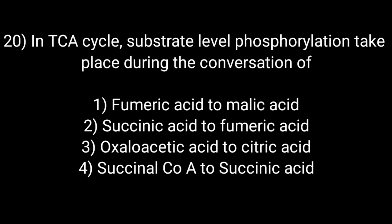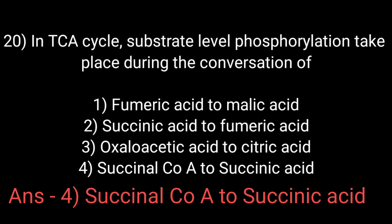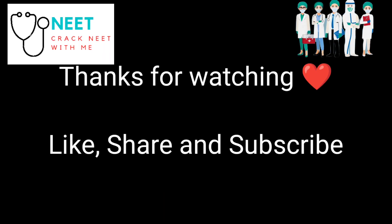In the TCA cycle, substrate-level phosphorylation takes place during the conversion of: Option number first: fumaric acid to malic acid. Option number second: succinic acid to fumaric acid. Option number third: oxaloacetic acid to citric acid. And option number fourth: succinyl coenzyme A to succinic acid. The correct answer is option number fourth: succinyl coenzyme A to succinic acid.